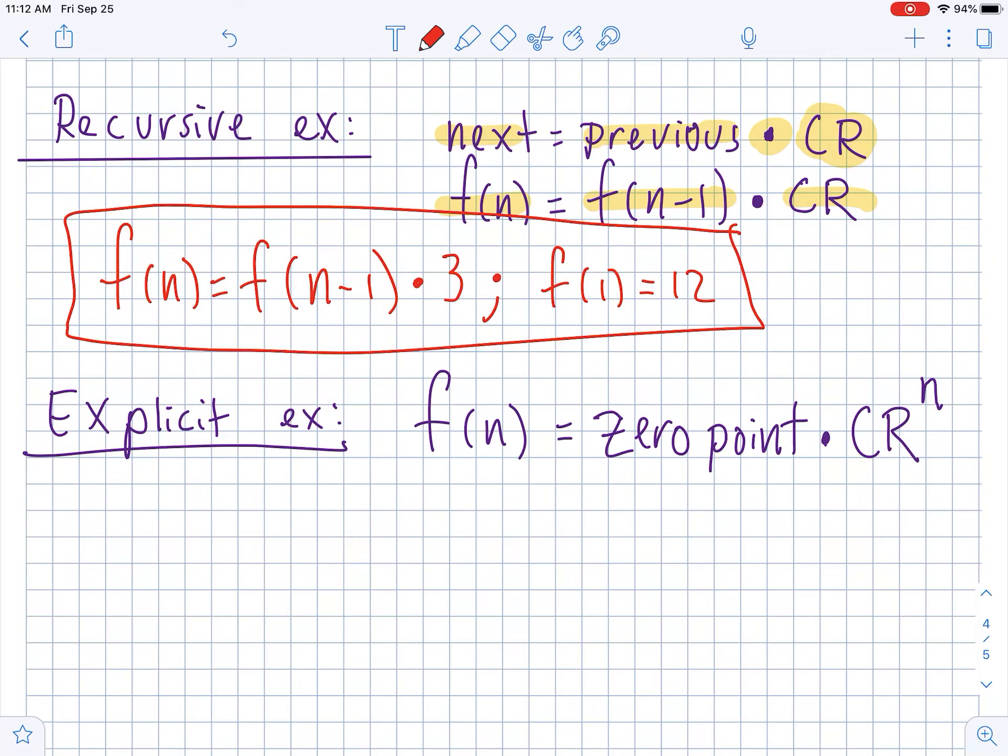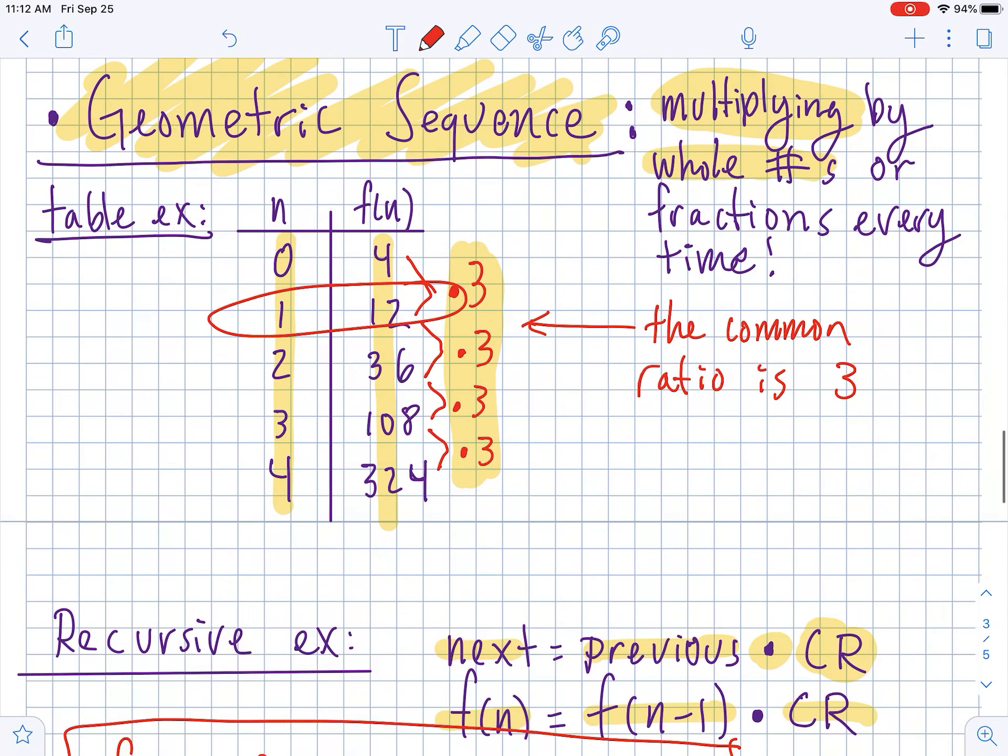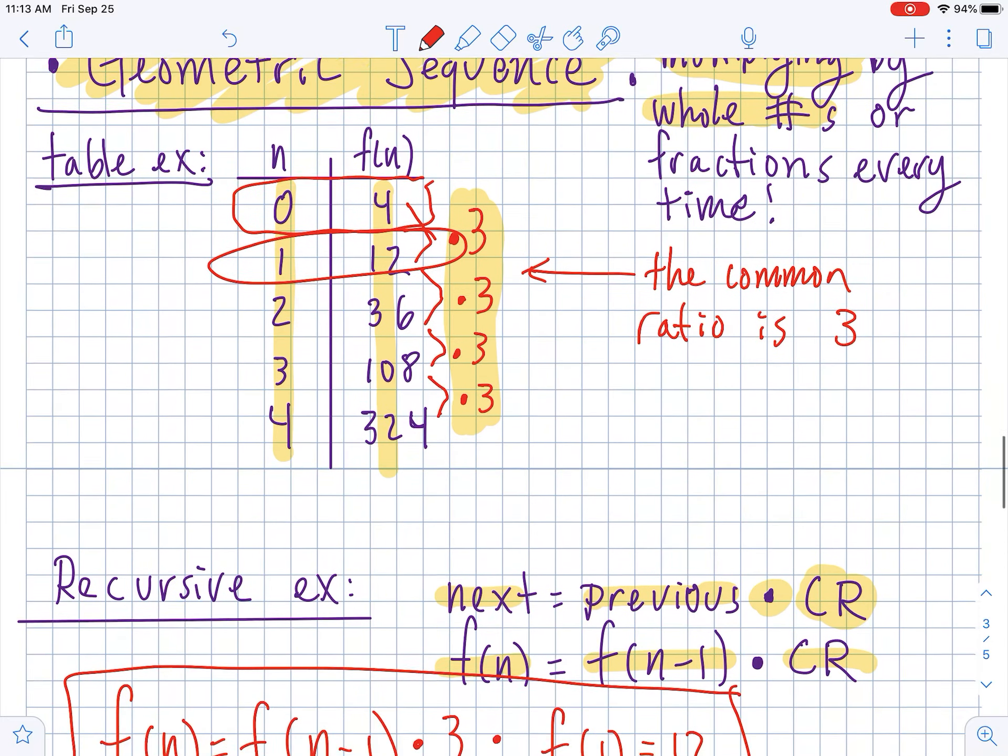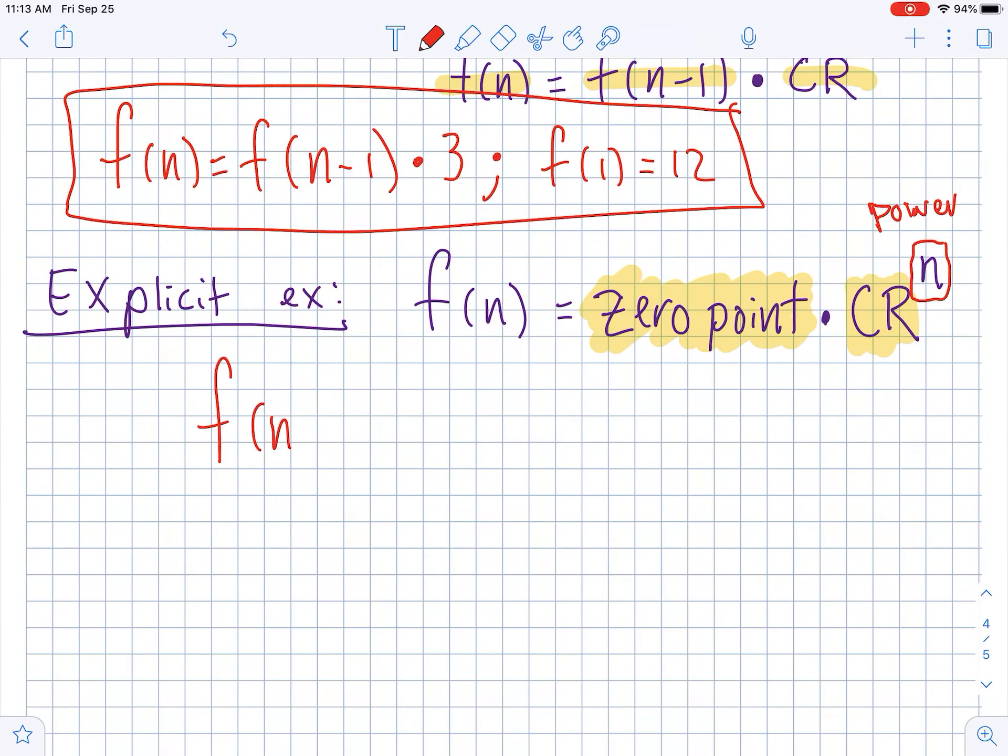The explicit equation for a geometric sequence. In general, you take the zero point, so like the day zero, multiply it by the common ratio to the power of n. So this right here is a power. With our specific example, we didn't actually have to figure out what day zero was. It's just right here in the table. When n is 0, f of n is 4. So f of n is equal to 4 times the common ratio, which was 3. It was being multiplied by 3 every single time, to the power of n. And then that is it.